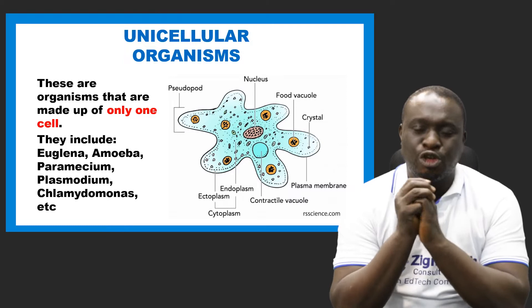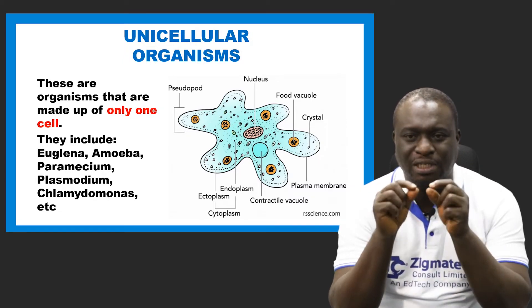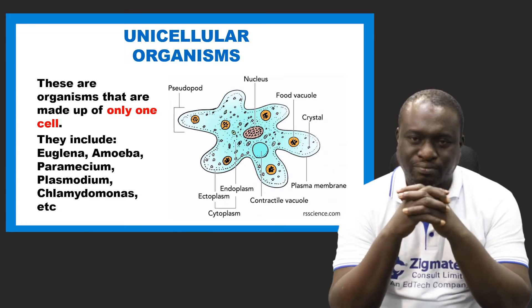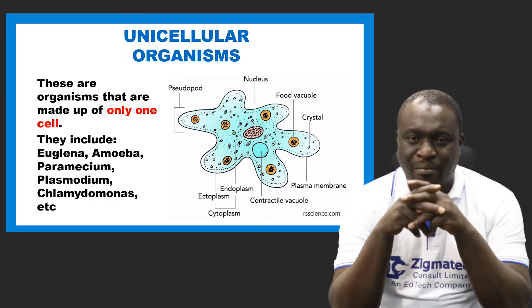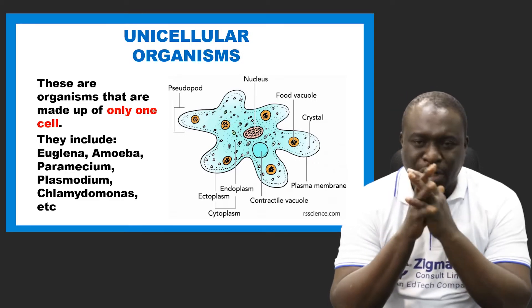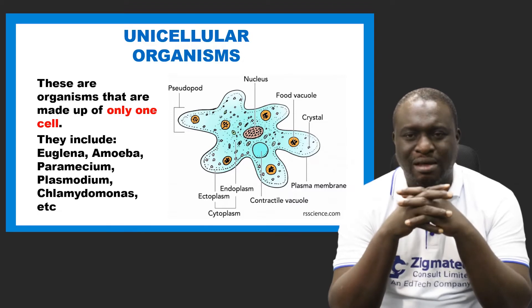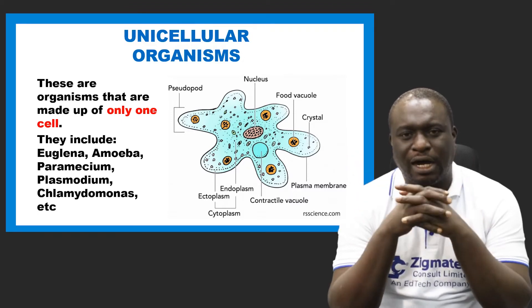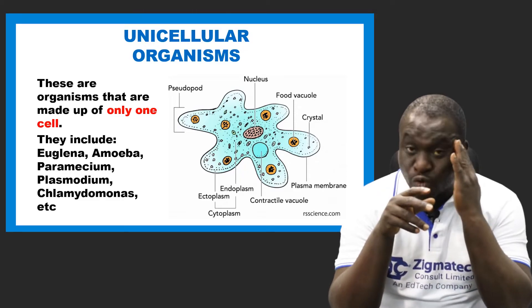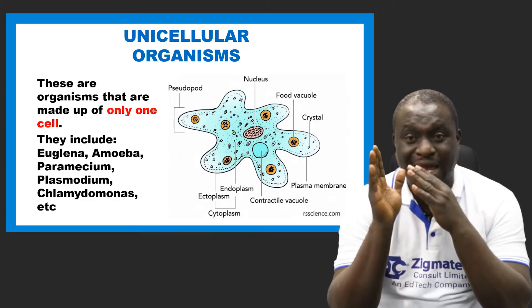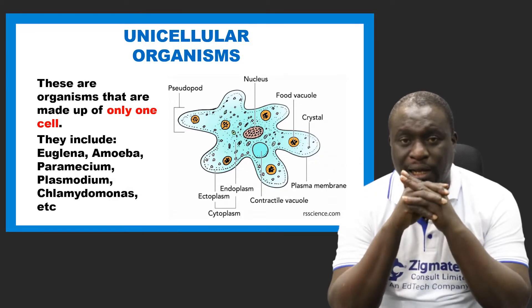Examples of unicellular organisms include the amoeba, which you can see in the diagram on screen — it is an example of a unicellular organism.